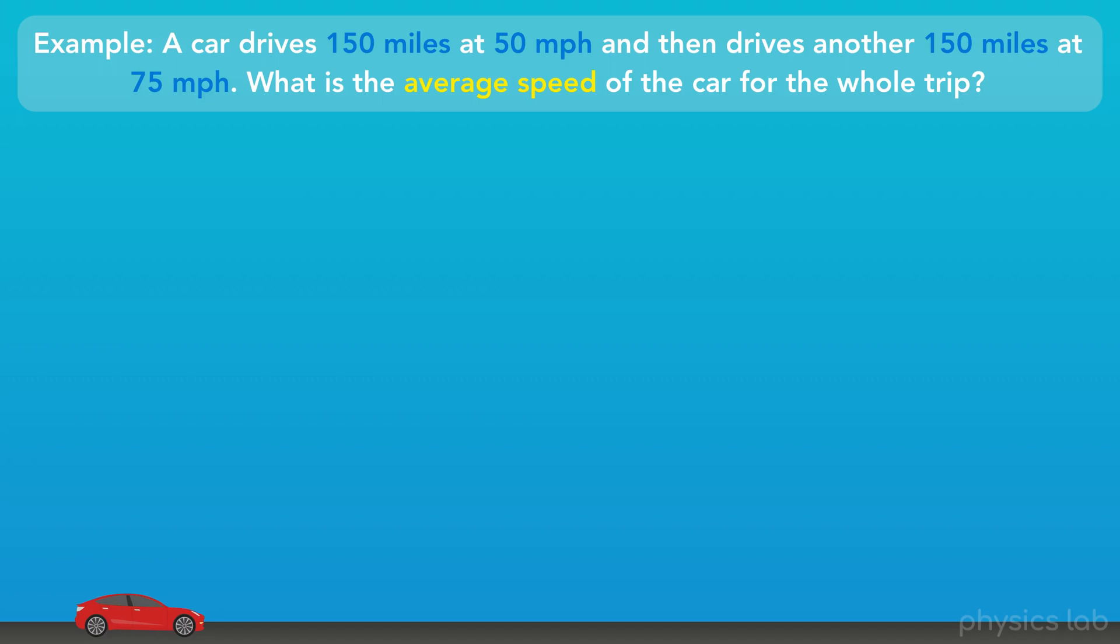We see the word average. We know what average means. We know how to take a group of numbers and find the average, right? So, to find average speed, can we just find the average of 50 miles per hour and 75 miles per hour?